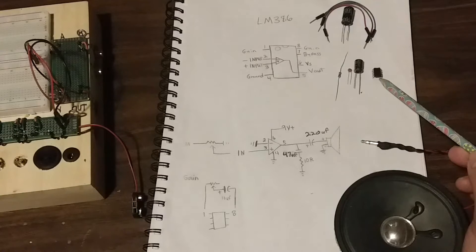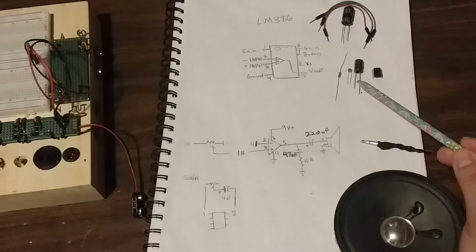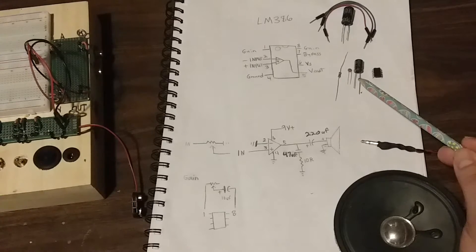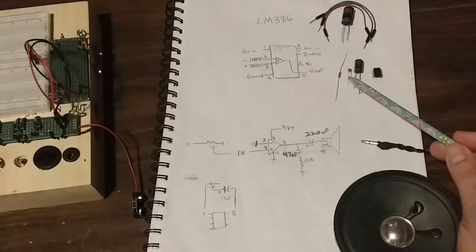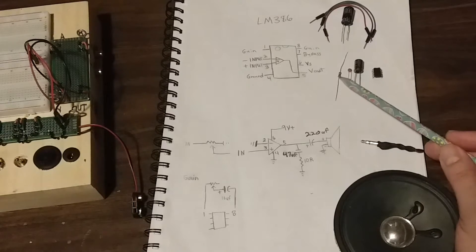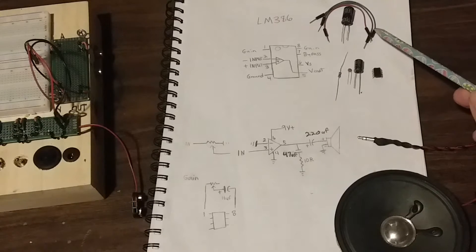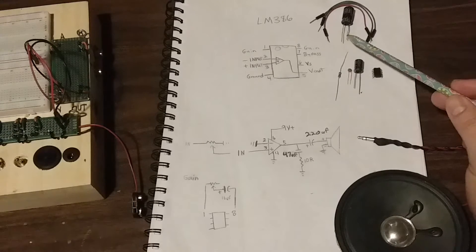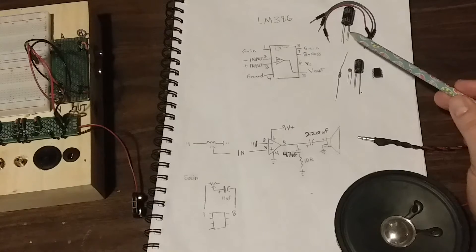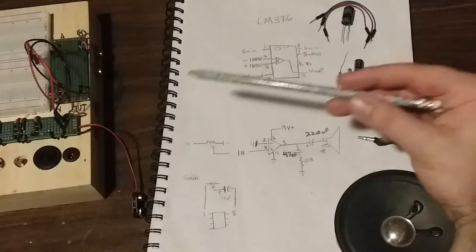Here we have the LM386 chip, a 220 UF capacitor, a 47 NF capacitor, and a 10 ohm resistor. I also have 3 cables, and a 1000 UF capacitor, and my breadboard test box.